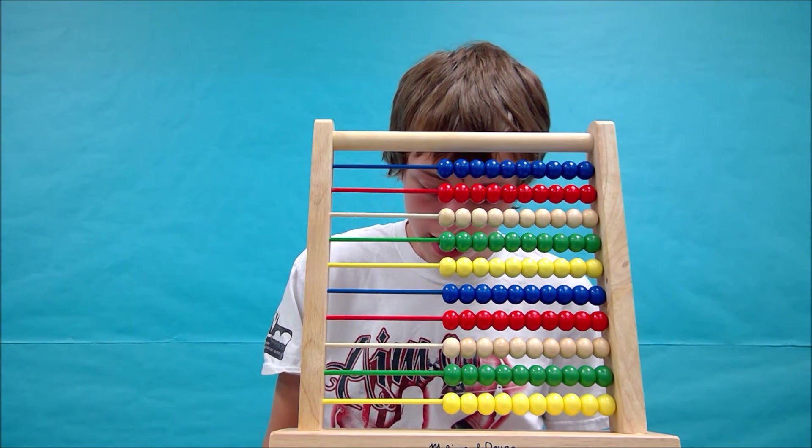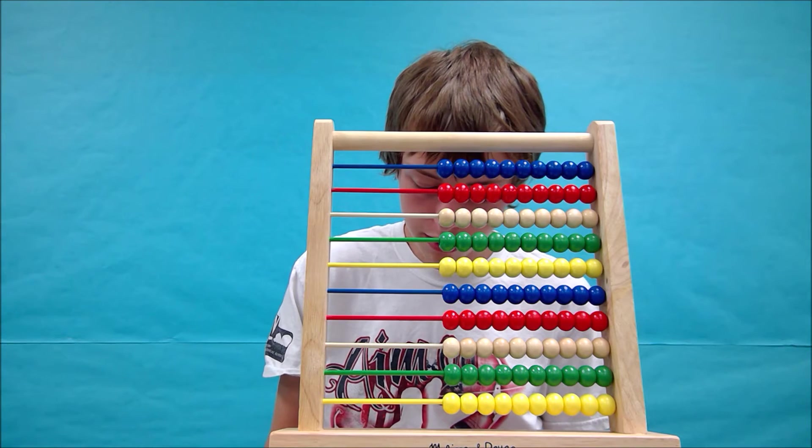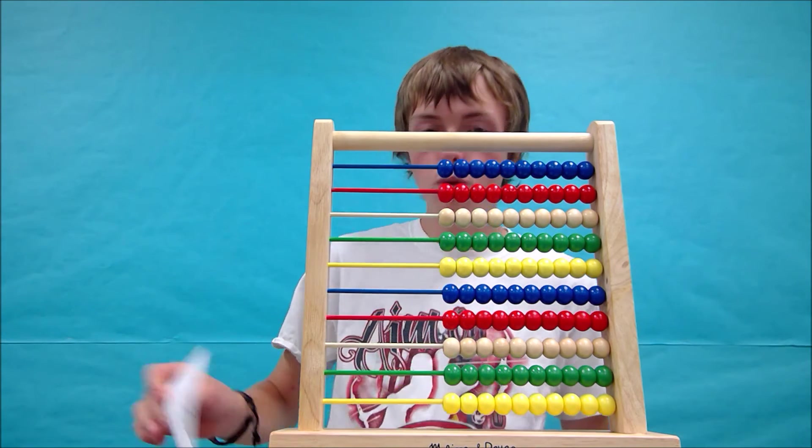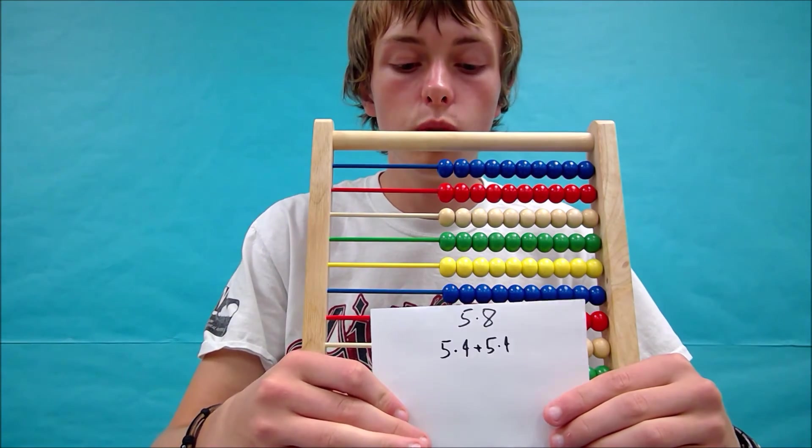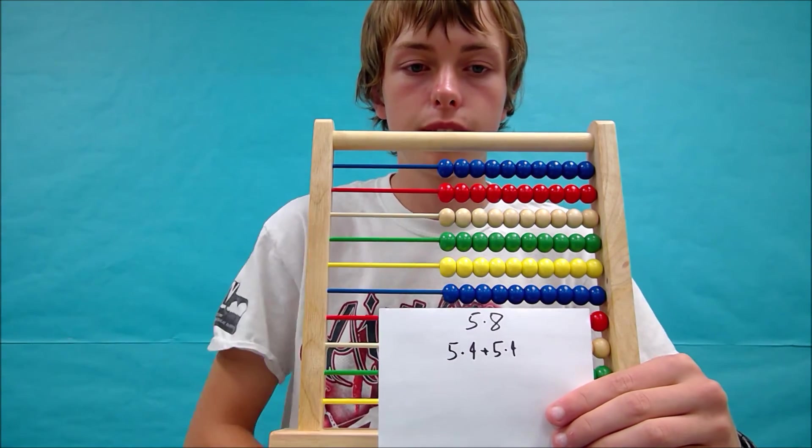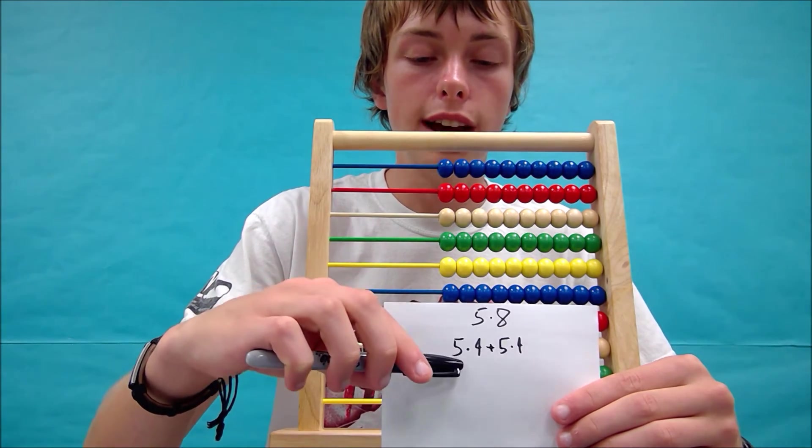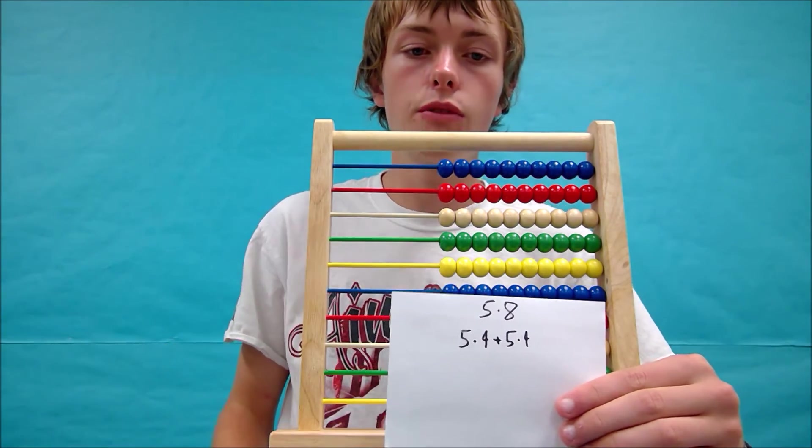we're going to do 5 times 4 plus 5 times 4, which in all reality is the same thing as 5 times 8. So whatever 5 times 4 equals, we're going to do that plus that. So let's figure out 5 times 4.